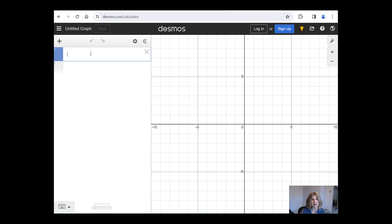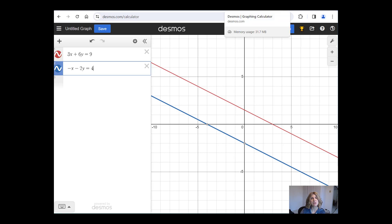So suppose we would like to solve the system 3x plus 6y equals 9. And for our second equation, we have minus x minus 2y equals 4. When we look at these equations, it looks like the red and the blue lines never meet. And that is exactly correct. This system of linear equations has no solution, because the two lines lie in a plane, and the two lines never meet. Thus, there is no solution point, or you could say no solution.